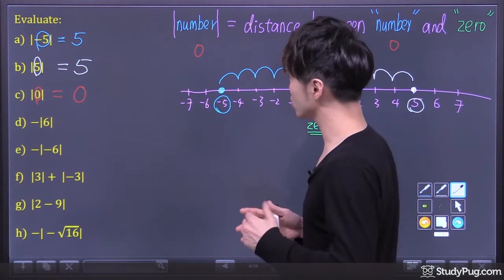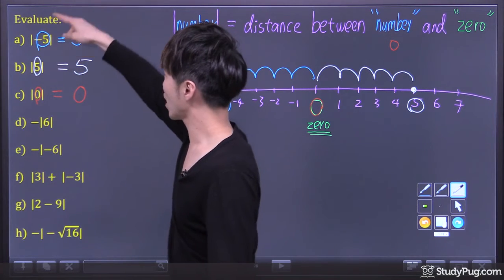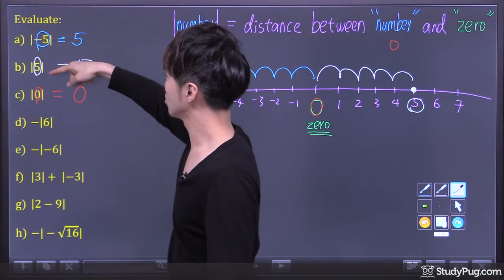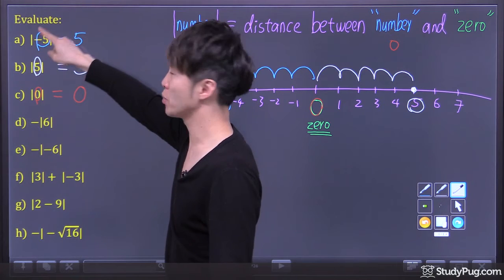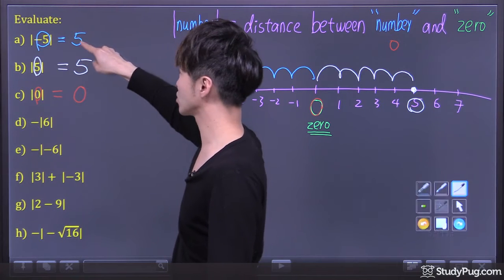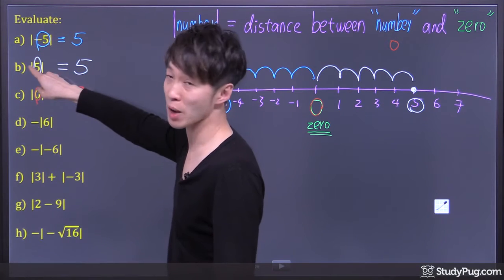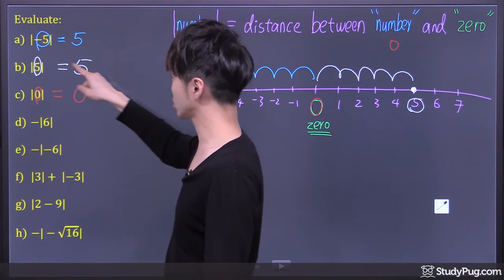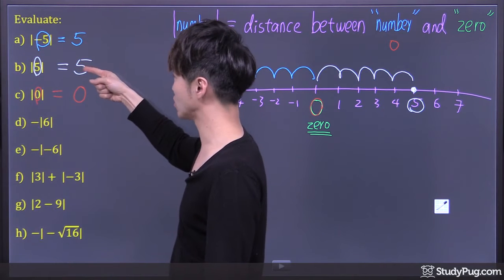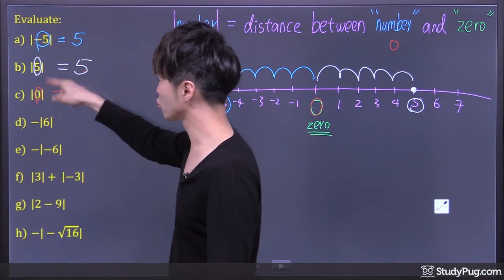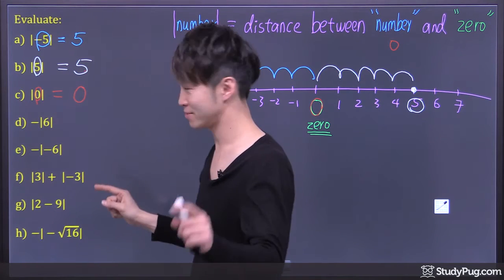In conclusion, we now know: absolute value of a negative number will produce a positive answer; absolute value of a positive number will just be the number itself — still a positive answer; and absolute value of 0 is 0.